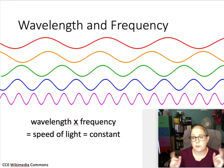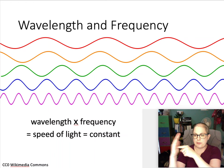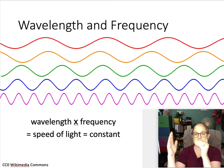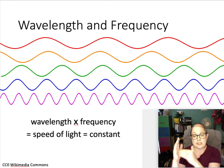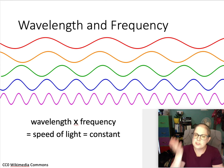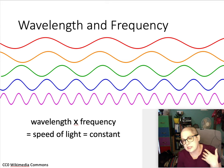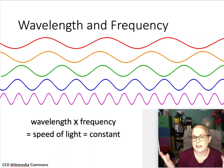Because light has a single speed, if you change the wavelength you have to change the frequency. If the wavelength is large — like the long wave at the top of the slide — its frequency is going to be lower. Compare that to the purple wave: it's moving at the same speed but you hit more crests per second, and the wavelength is shorter. So these things are inversely related: increase the wavelength and you decrease the frequency.